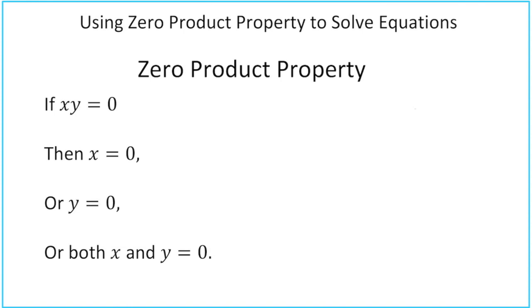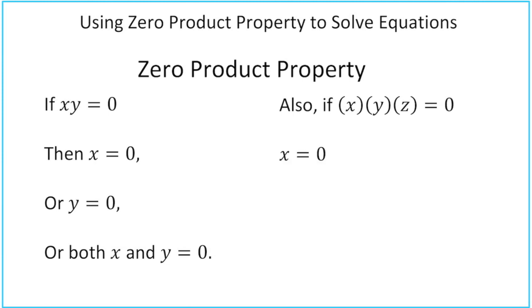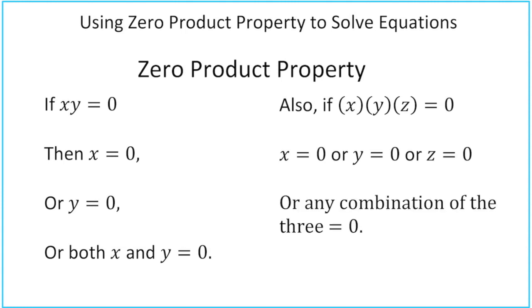Zero product property works no matter how many variables are being multiplied together. So if you had x times y times z equals zero, then that would mean x equals zero, or y equals zero, or z equals zero, or any combination of the three has to equal zero.